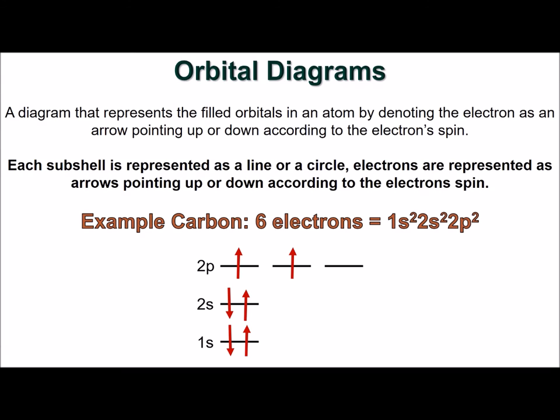Electron configurations do not give any information about the magnetic quantum number or spin of the electron, so we use orbital diagrams, the second way to describe electrons in an atom, to extract this information.